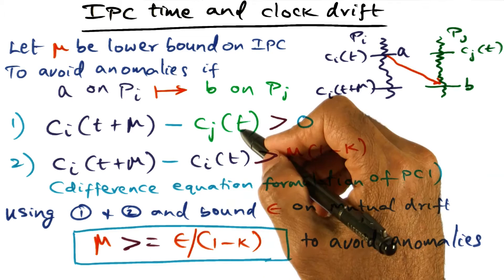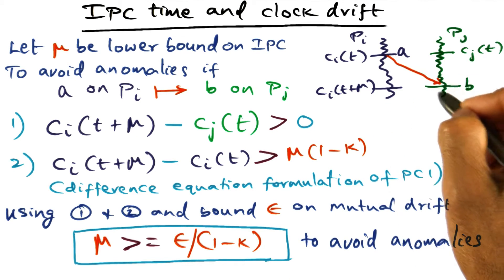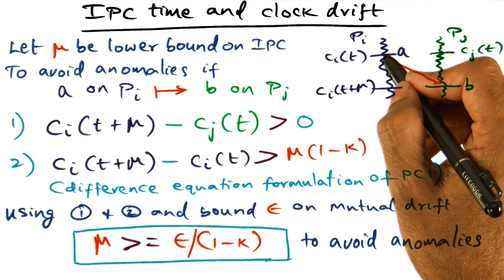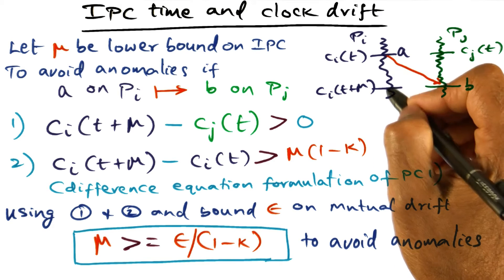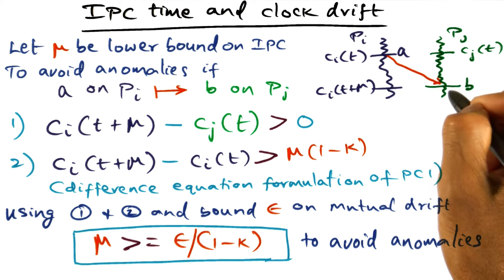And all that we are saying through this first one is that this is the act of sending a message, and this is the act of receiving the message. The time stamp that I'm going to give to this, the real time that I'm going to give to this by reading my clock, it better be higher than the time at which this message is actually sent.